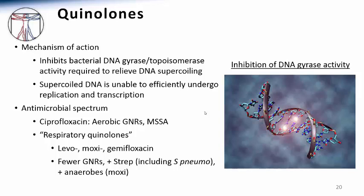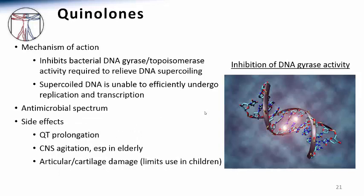Later generations of quinolones were created that modified the narrow spectrum of ciprofloxacin to include additional respiratory pathogens such as Streptococcus pneumoniae and the atypicals. These newer quinolones, often referred to as the respiratory quinolones, include moxifloxacin, levofloxacin, and gemifloxacin. These drugs are widely used but have significant potential side effects including CNS irritation, often presenting as excessive agitation in elderly patients. Quinolones can also cause a prolonged QT interval, and they've been associated with cartilage and joint defects limiting their use in growing children.